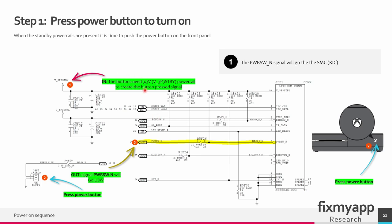First step is to check if the 3.3 volt standby voltage is present on this line. The 3.3 volt is used to create data lines for all the output signals. Step 2 is to press the power switch, and 3.3 volt will be present on the data line going to the Southbridge. When you press the switch it will create a short to ground, so this signal goes from 3.3 volt to zero. A 3.3 volt data line works by transmitting digital signals — the logical high state is 3.3 volt and the logic low state is close to zero volts.